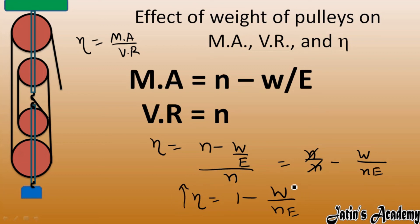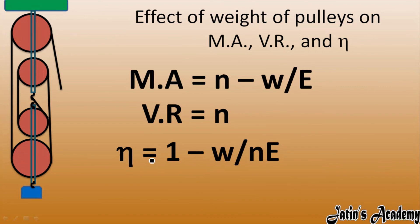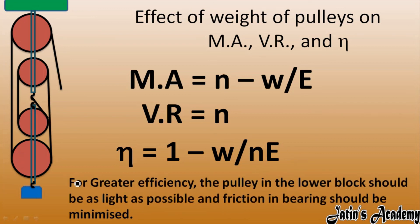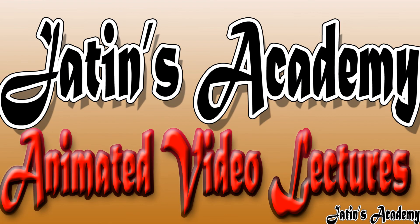To increase efficiency, decrease the weight of the pulleys. In order to increase the efficiency of the pulley system, you have to make the pulleys as light as possible. For greater efficiency, the pulleys in the lower block should be as light as possible and the friction between them should be minimized — only then can we achieve higher efficiency for a block-and-pulley system.